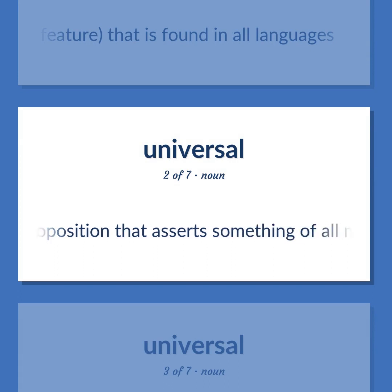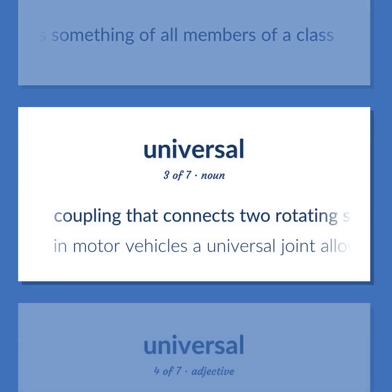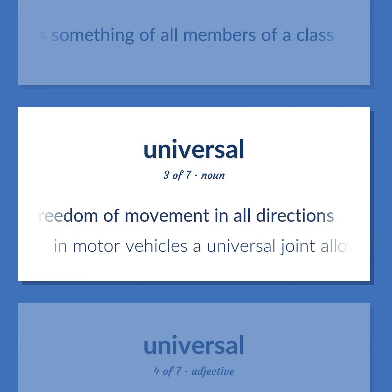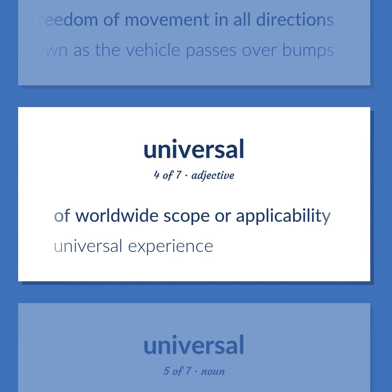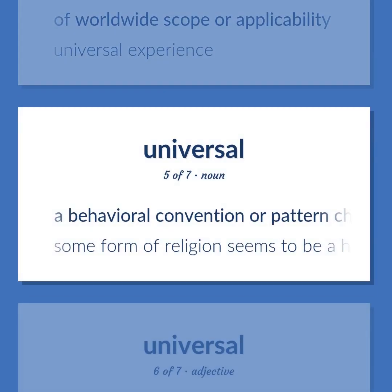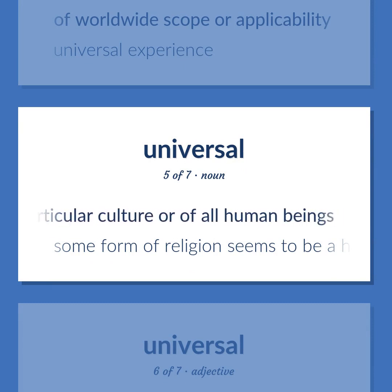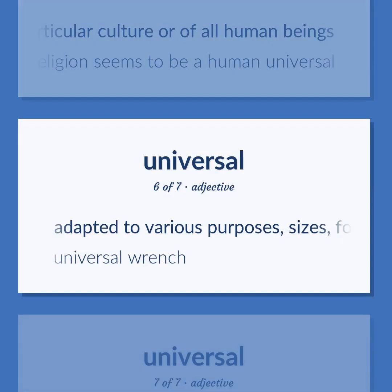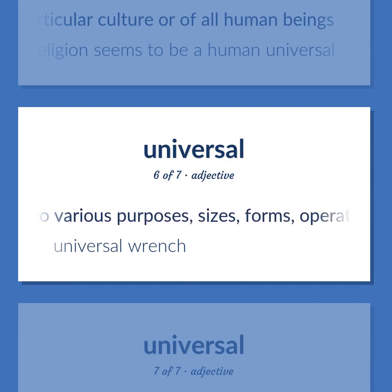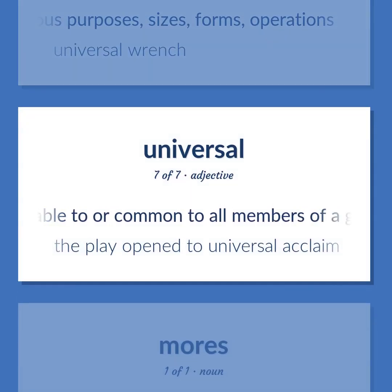Universal: logic — a proposition that asserts something of all members of a class. Coupling that connects two rotating shafts allowing freedom of movement in all directions — in motor vehicles, a universal joint allows the drive shaft to move up and down as the vehicle passes over bumps. Of worldwide scope or applicability — universal experience. A behavioral convention or pattern characteristic of all members of a particular culture or of all human beings — some form of religion seems to be a human universal. Adapted to various purposes, sizes, forms, and operations — universal wrench. Applicable to or common to all members of a group or set — the play opened to universal acclaim.